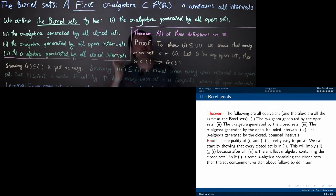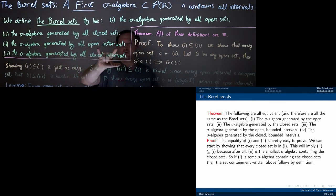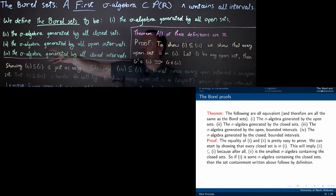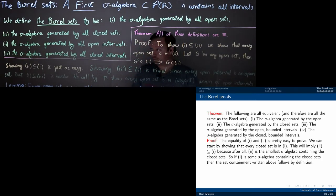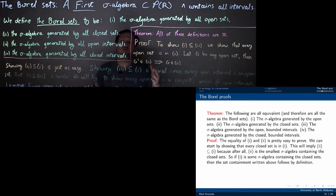It's often worth noting that this sigma algebra can be defined in many different ways, each of which can be useful depending on your situation. A common way to define the Borel sets is as the sigma algebra generated by all open sets. It's worth knowing that that's the same as the sigma algebra generated by all closed sets. My preferred definition, from the direction I've been approaching this topic, is the sigma algebra generated by all open intervals — but it's equivalent to all the others. You could also use closed intervals. All of these sigma algebras are the same sigma algebra: the Borel sets. But we have to prove that these definitions are all equivalent to each other.